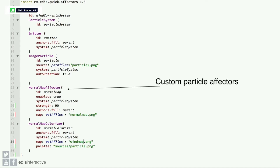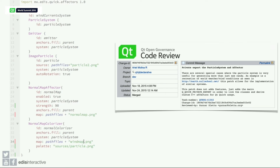So we created a normal map effector. Once we encoded the 2D vector of the wind into an image, we created a custom effector for the particle system. We realized by this time that the particle system was riddled with bugs, so we patched some of them and created these new normal map effectors. We derived a class and basically affect every particle with the direction of the wind at that position. It's really easy to do once you have both the vector and the position of the particle. These patches are already in Qt 5.7, so it should be easy for you to add more effectors — not only for wind, but for many other things.